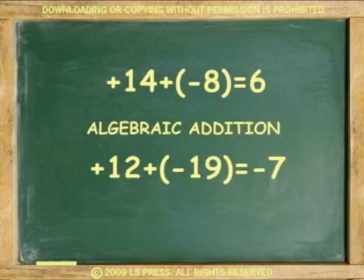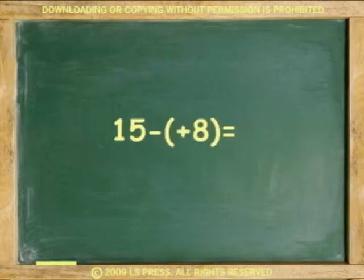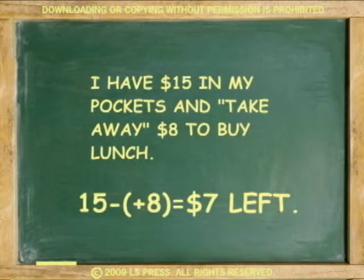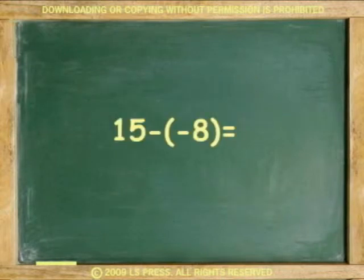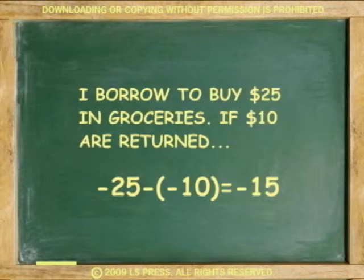If we have algebraic addition, we should also have algebraic subtraction. Algebraic subtraction involves taking away. Taking away a positive number: for example, I have $15 in my pocket and take away 8 to buy lunch — positive 15 minus positive 8 equals $7 left. Now, taking away a negative number: I have $25 left after paying $10; if the payment is returned, 25 minus negative 10 equals 35. If I borrow to buy $25 in groceries and $10 are returned, negative 25 minus negative 10 equals negative 15. Notice that because there is a benefit from taking away a negative, the result of negative times negative is positive.